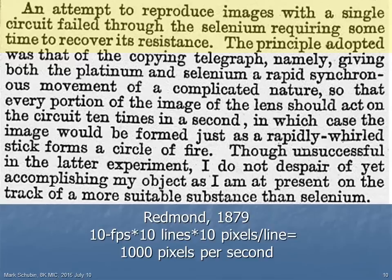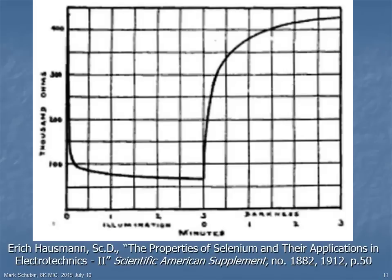Redmond was unable to make the scanned version of his video system work because the selenium photocell he was using took too long to recover its resistance after light exposure. Here's a chart of the resistance of a selenium photocell both during and after exposure to light. Please note that the units of the x-axis, time, are labeled in minutes. Clearly, that was much too slow for scanned television.